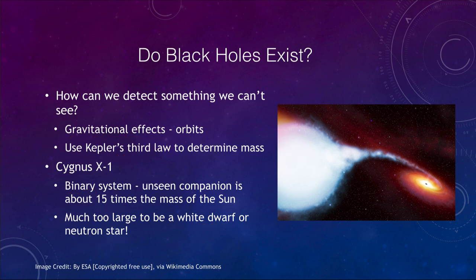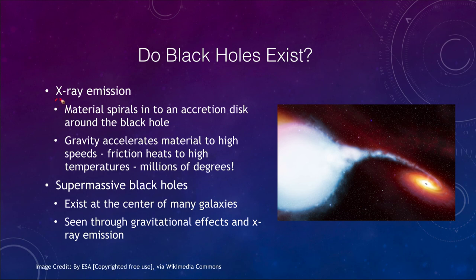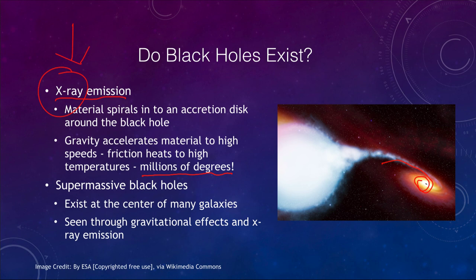We can also look at X-ray emissions. As material spirals into the accretion disc and into the black hole, it gets heated up to millions of degrees, and at temperatures of millions of degrees it will emit X-rays. That is one way to measure the presence of a black hole. We also have supermassive black holes — these exist at the center of most, if not all, galaxies, and are also detected through gravitational effects and X-ray emissions. We'll look more about that when we talk about galaxies.